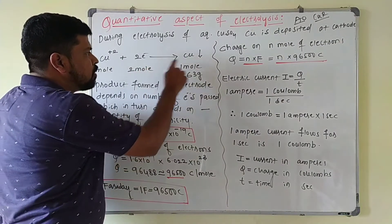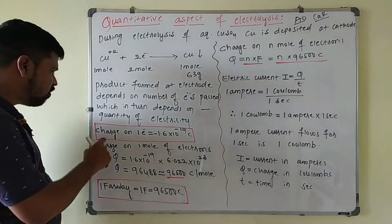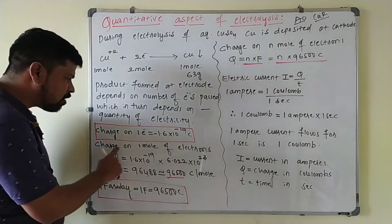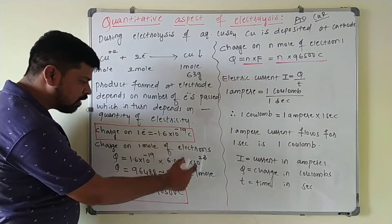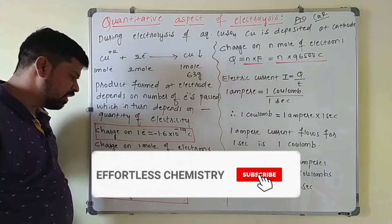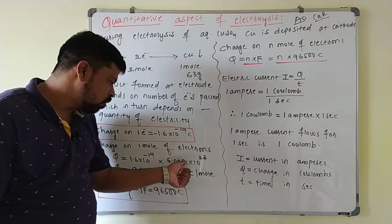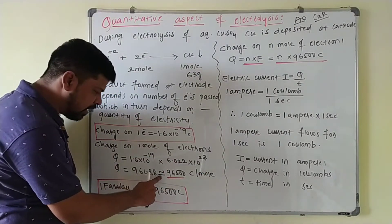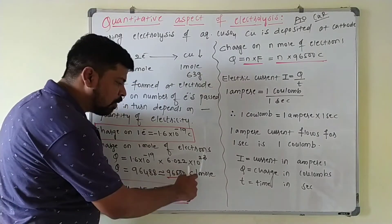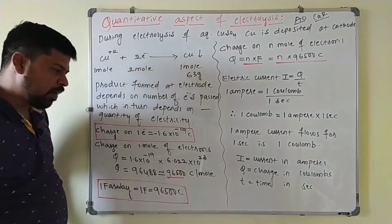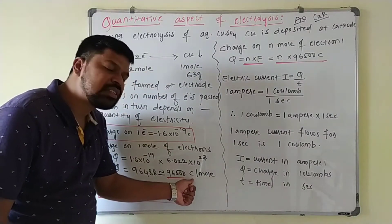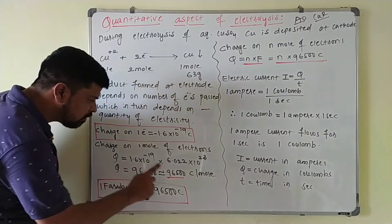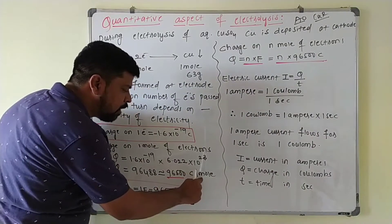Every two moles of electrons deposit one mole of copper. The charge on one electron is 1.6 × 10⁻¹⁹ coulombs. The charge on one mole of electrons is obtained by multiplying this by 6.022 × 10²³, giving 1.6 × 10⁻¹⁹ × 6.022 × 10²³ = 96,488, which is nearly equal to 96,500 coulombs per mole. This is a very important value: 96,500 coulombs per mole is the charge present on one mole of electrons.